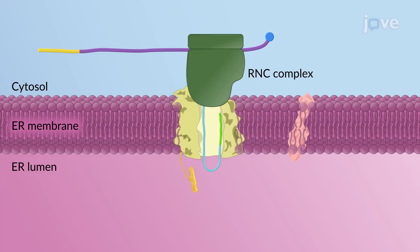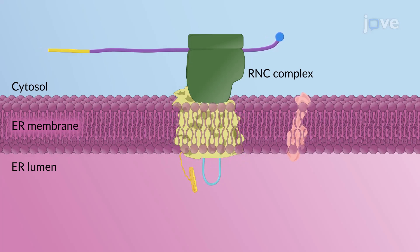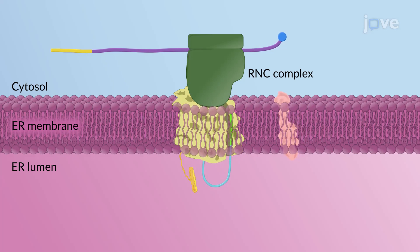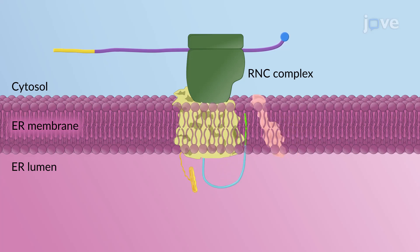As translocation continues, the looped signal sequence uses the lateral gate of the SEC61 channel to move out. It is then cleaved off by the adjacent signal peptidase complex.